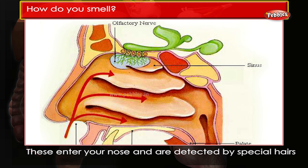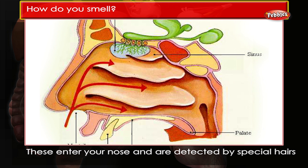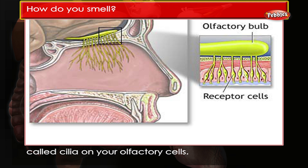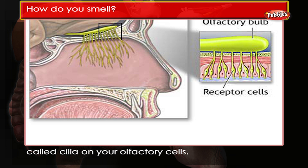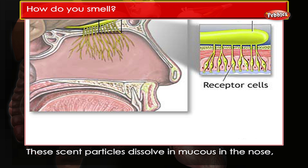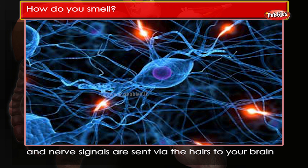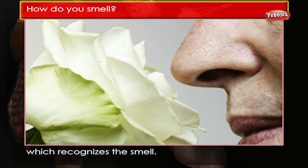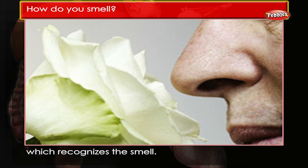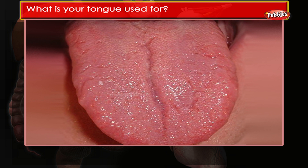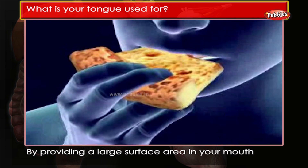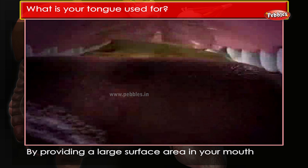How do you smell? Smells consist of small particles called odorants. These enter your nose and are detected by special hairs called cilia on your olfactory cells. These scent particles dissolve in mucus in the nose, and nerve signals are sent via the hairs to your brain, which recognizes the smell.